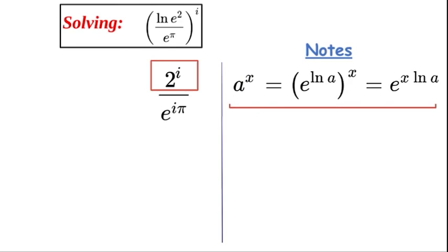First of all, we could write a to the power of x as e to the ln a, as they are opposites, all to the power of x. And multiplying in here by the power rule will give us e to the x ln a. So the base is going to be 2 and the exponent is going to be i.